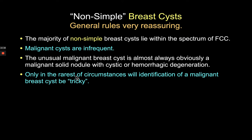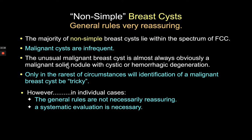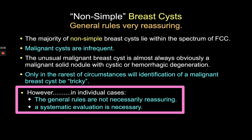General rules for non-simple breast cysts are reassuring: the majority are part of the spectrum of fibrocystic change, and malignant breast cysts are relatively infrequent. The unusual malignant breast cyst is almost always obviously a malignant solid mass with cystic or hemorrhagic degeneration. However, general rules are great for populations but not necessarily for individuals — and patients often feel they'll be the exception. So you still need a systematic way of evaluating non-simple breast cysts.